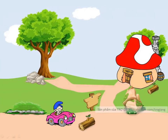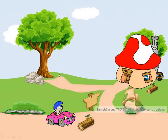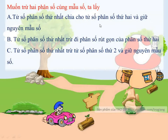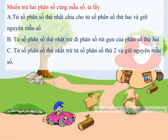Chúng ta tiếp tục vượt chướng ngại vật cuối cùng! Muốn trừ 2 phân số cùng mẫu số, ta lấy... A: Tử số phân số thứ nhất chia cho tử số phân số thứ 2 và giữ nguyên mẫu số. B: Tử số phân số thứ nhất trừ đi phân số rút gọn của phân số thứ 2. Và C: Tử số của phân số thứ nhất trừ tử số của phân số thứ 2 và giữ nguyên mẫu số.